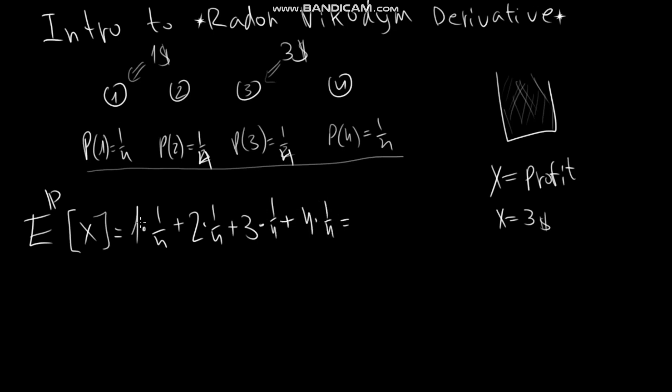We have 1 times 1, 2 times 1, 3 times 1 and 4 times 1. So we have this over 4. So we have 10 over 4 which is 2 and a half. So under these probabilities which I am calling this big P, the expected profit is 2 and a half dollars.